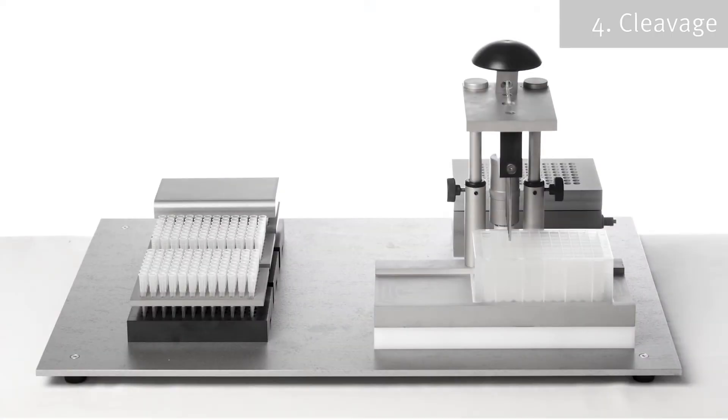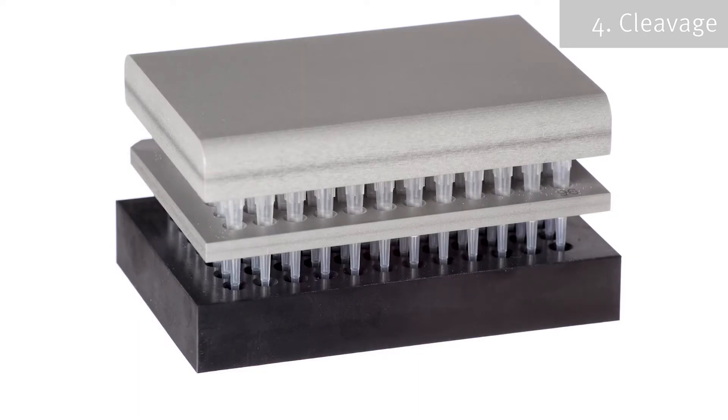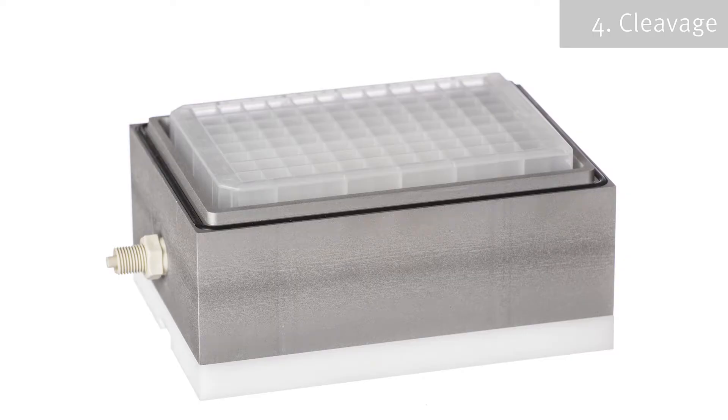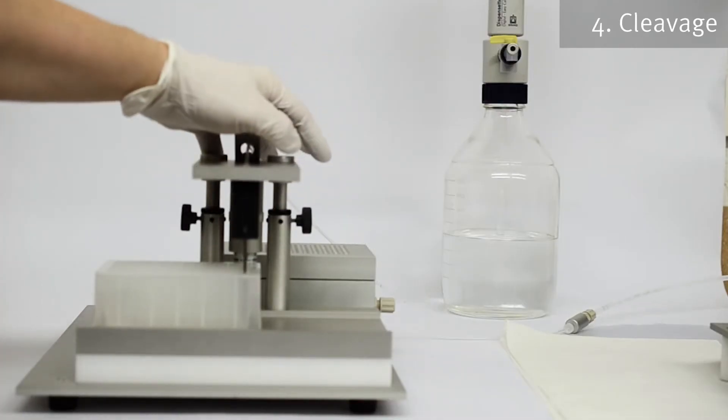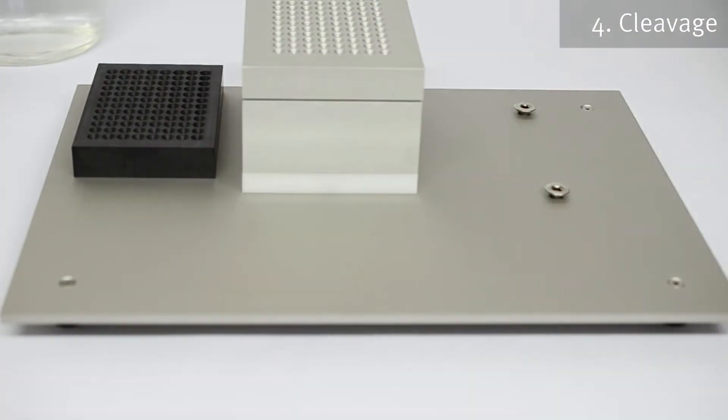The cleavage module consists of a blind plate and reactor cover plate, vacuum box containing 96 deep well plate, ether aspirator dispenser, and a tip workbench where the cleavage module accessories are handled.